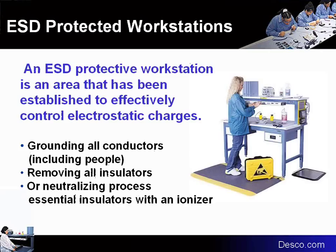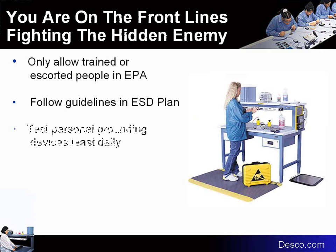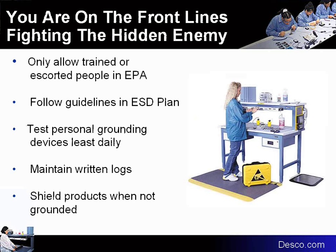The main feature of the ESD protected workstation is grounding all conductors including people, removing any insulators, or neutralizing the process with an ionizer. Only trained or escorted operators are allowed in the EPA. All guidelines in the company ESD control plan need to be followed, testing needs to be done daily with written logs to verify this testing, and shielding is always used when products are not grounded.